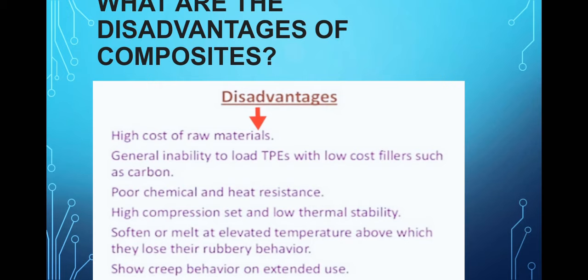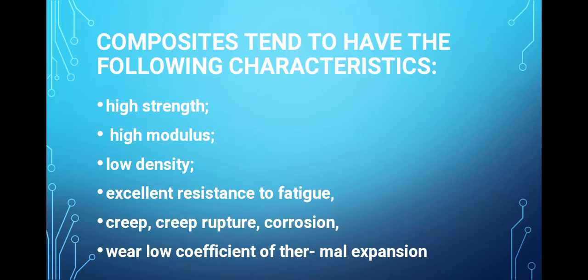The properties and characteristics of composite materials include high strength, high modulus of elasticity, low density, and excellent resistance to fatigue. Fatigue is the property where a material undergoes permanent deformation under repeated or random loading. Other properties include creep resistance, corrosion resistance (corrosion is an electrochemical effect causing metal oxides like Fe2O3·xH2O to form), and low coefficient of thermal expansion.